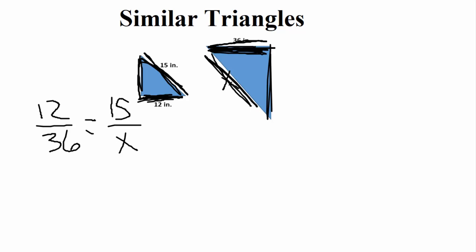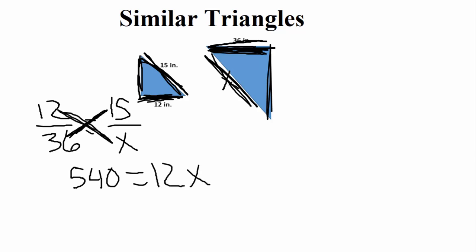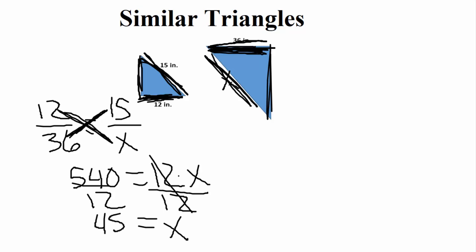Once again we cross multiply. 36 times 15 is 540, which equals 12 times x, or 12x. To solve this one-step problem, we divide both sides by 12. Plugging 540 divided by 12 into the calculator gives us 45. Our problem is in inches, so the hypotenuse of this triangle is 45 inches long.